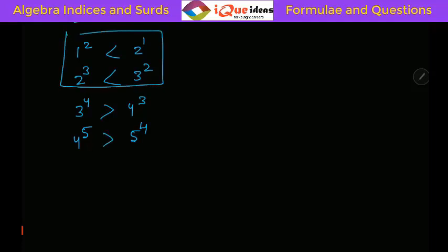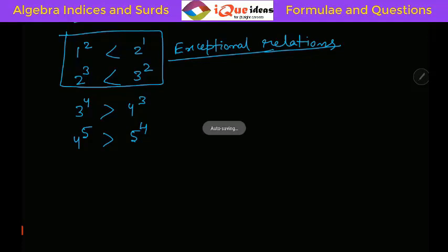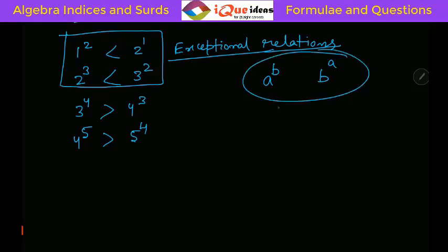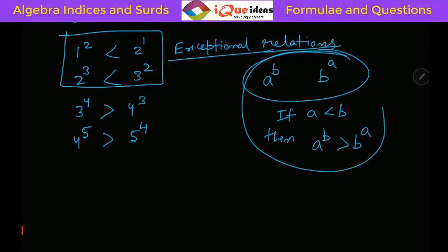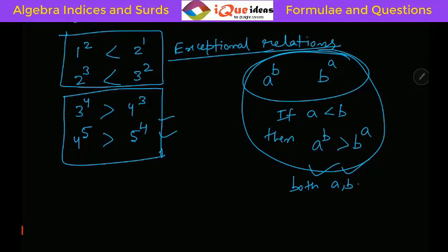These two — (1,2) and (2,3) — are the only exceptional relations. Other than these two, the smaller base to a higher power will always be greater than a higher base to a smaller power, provided the same two numbers are being interchanged. That is, if it is a raised to b and b raised to a, and a is smaller than b, then a raised to b is greater than b raised to a. Both a and b should be greater than or equal to 3 for this rule to apply directly.